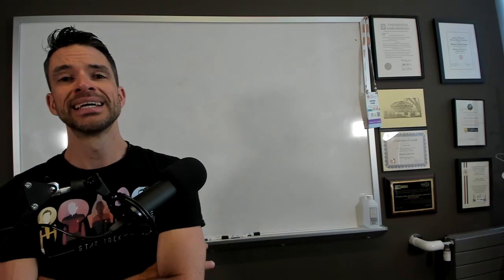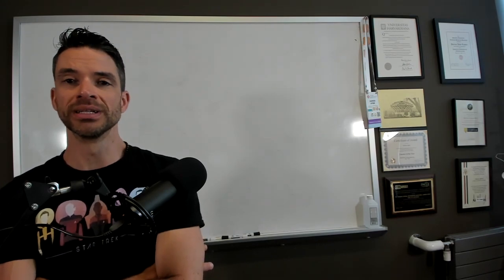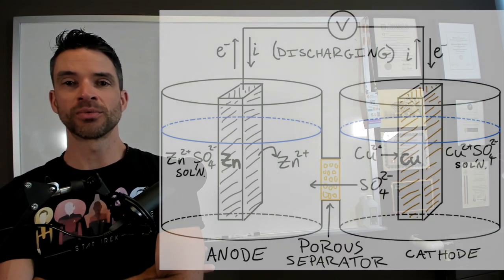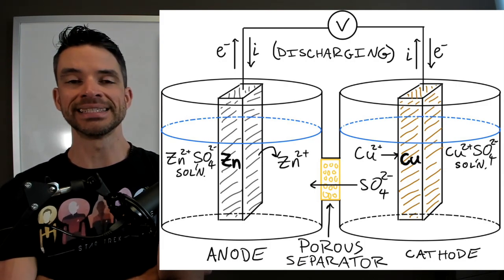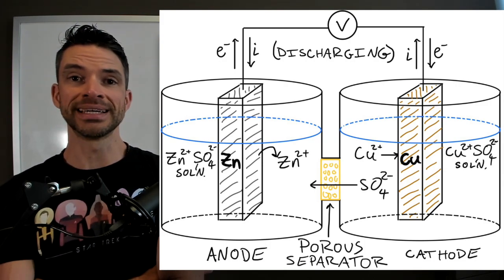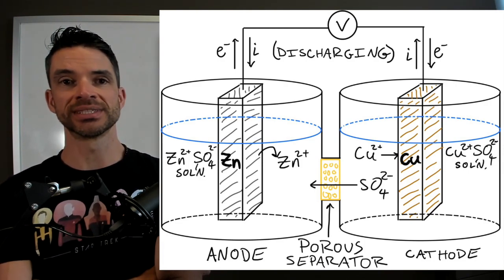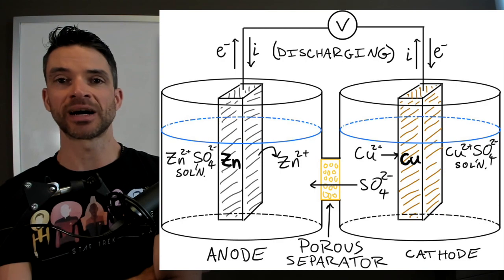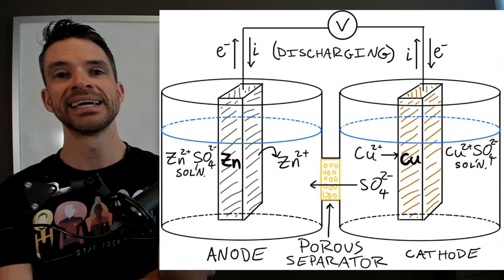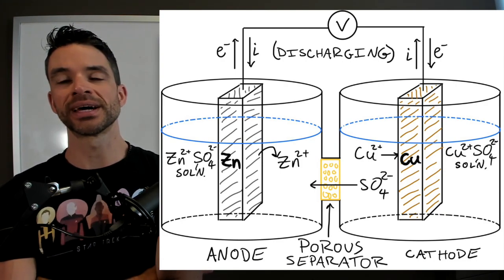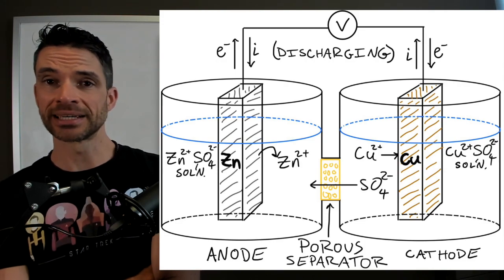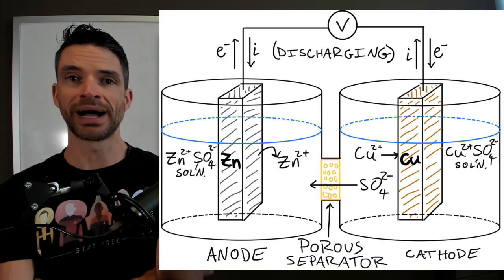And this is sort of the stereotypical type of electrochemical cell where you have a copper plate and a zinc plate in two baths of electrolyte solution. So zinc sulfate on the zinc side and copper sulfate on the copper side. And you have a porous separator that allows the negatively charged sulfate ions to go back and forth.